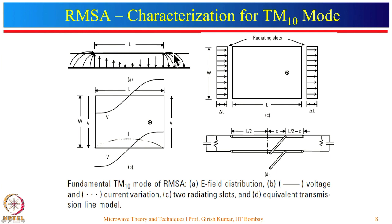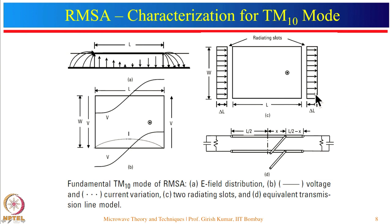The field distributions can be resolved into vertical and horizontal components. The vertical components at opposite edges cancel in the broadside direction, but the horizontal components at both edges point in the same direction. Therefore the rectangular microstrip antenna can be analyzed by assuming two slot antennas — one at each radiating edge — with equal amplitudes (plus V and minus V). We can then apply array theory to find the radiation pattern by multiplying the slot pattern with the array factor.